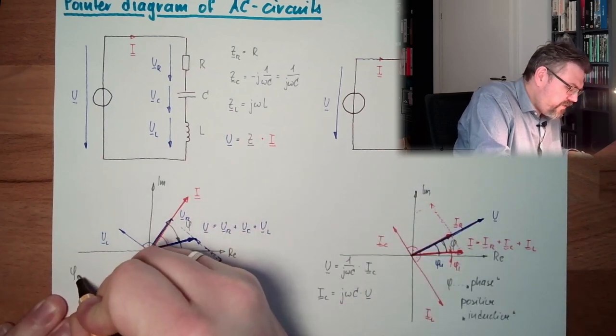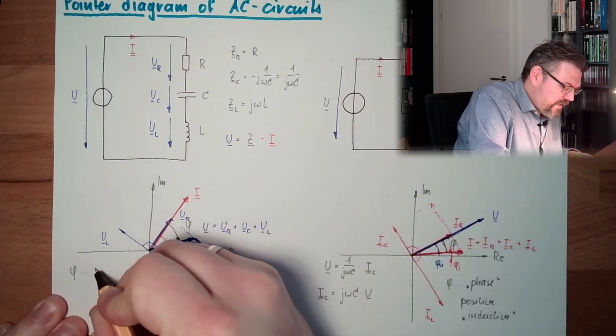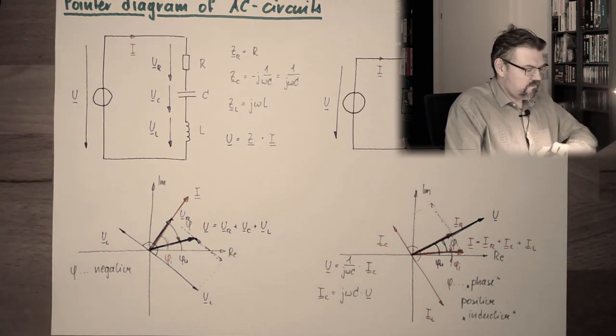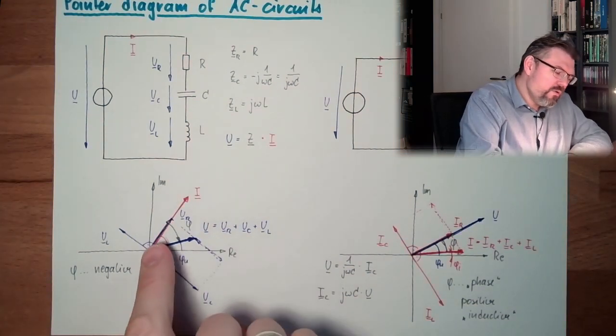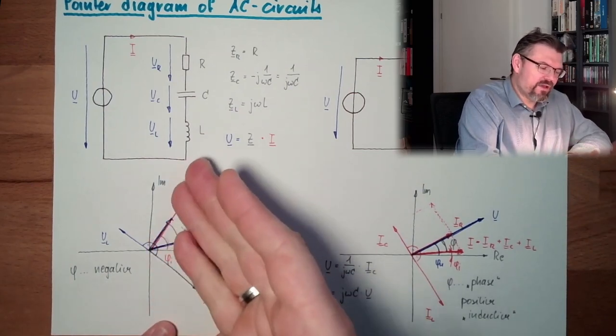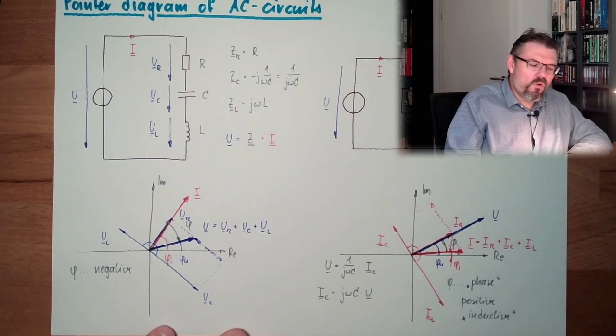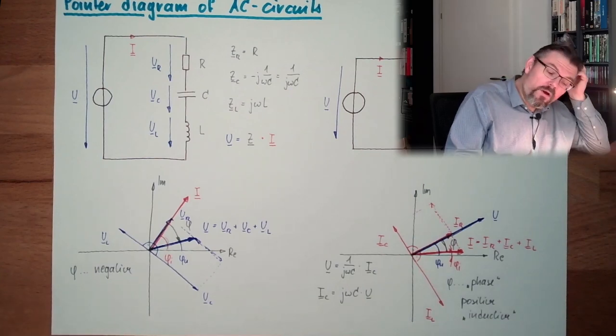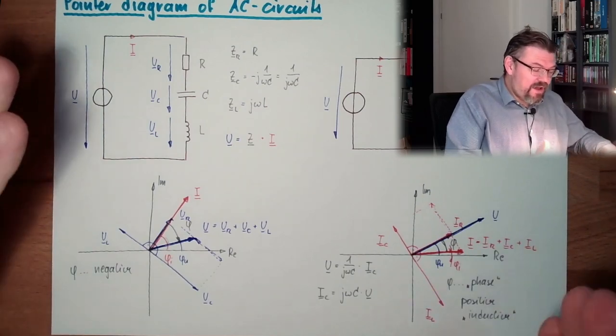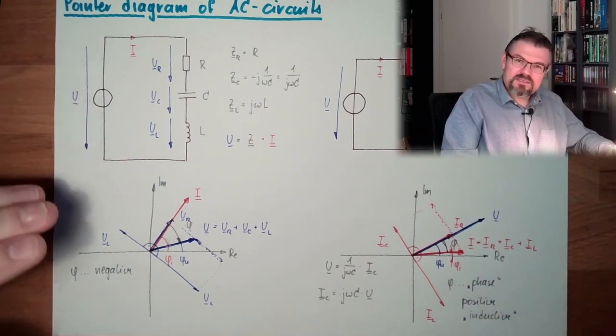And in this case, phi is negative. Because we always look from I to U. This is acting more like a capacitor, this is acting more like a coil. You see? Everything fits somehow together.